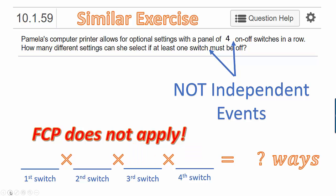But how do we know? It's very easy to figure out by starting to use the same approach and analyzing each step carefully. What are the options for the first switch? It can either be on or off, so there are two ways. What about the second switch? All we know is that at least one switch must be off, but it's still reasonable that we could have two ways for the second switch.